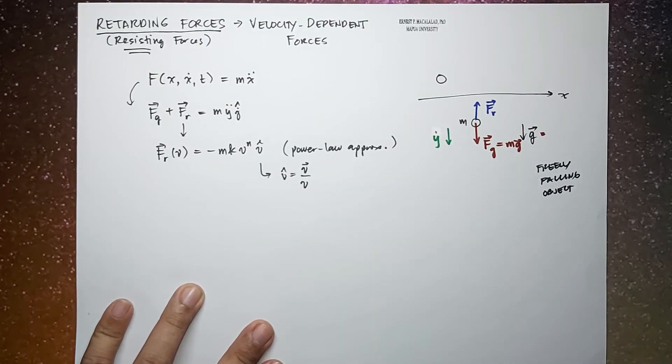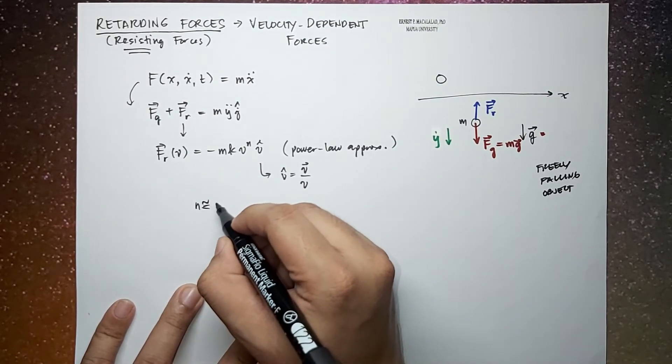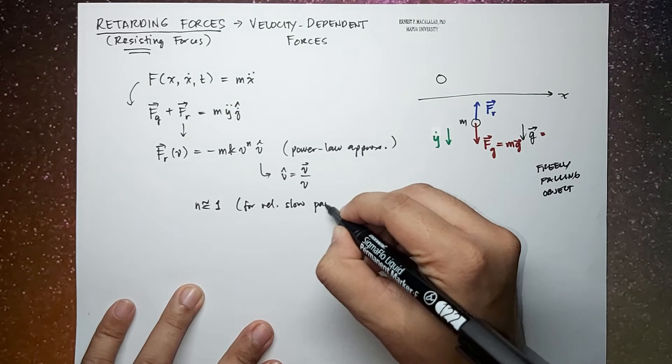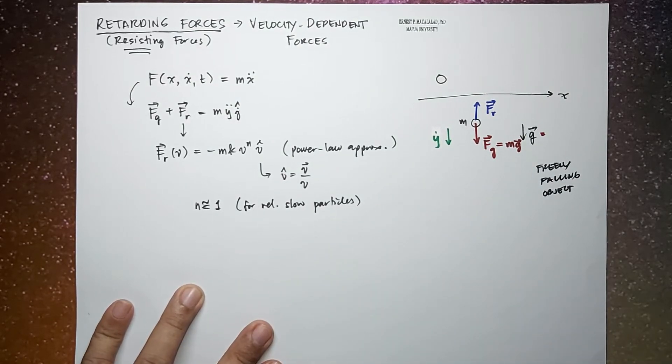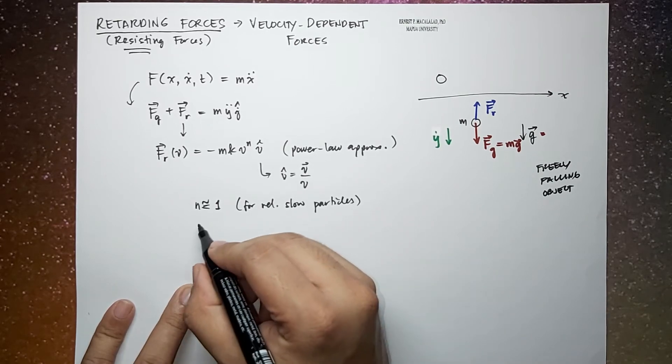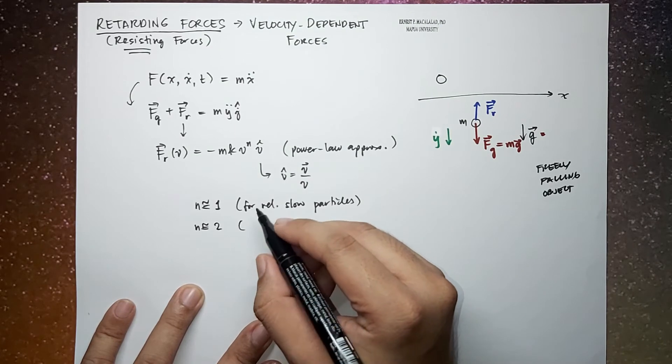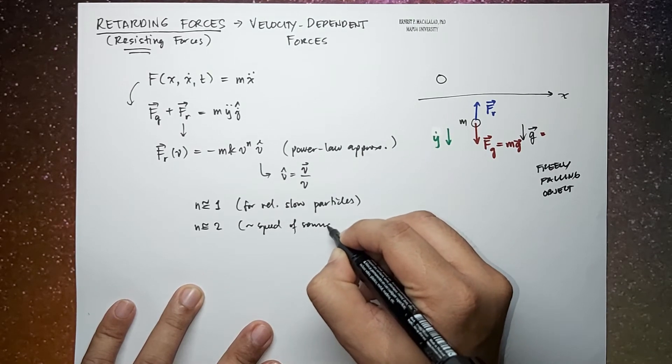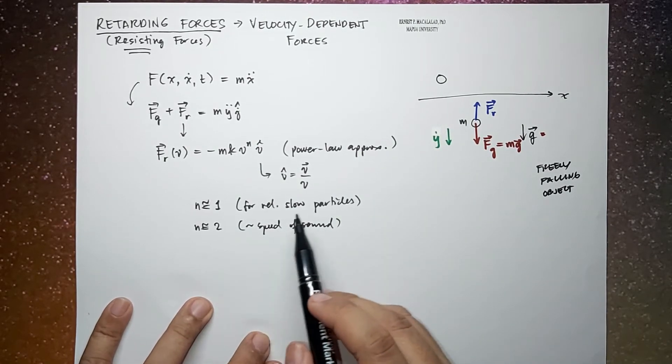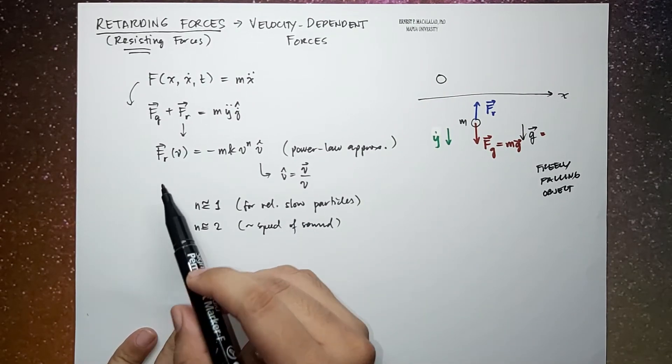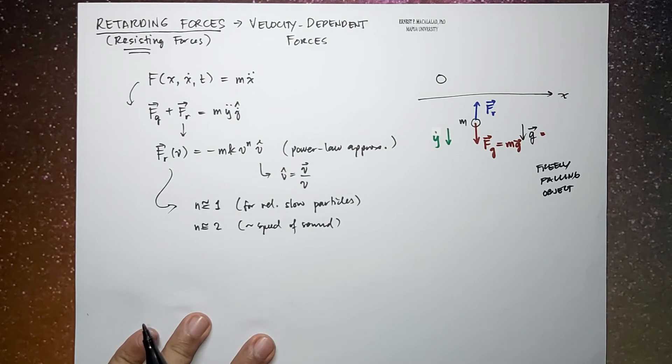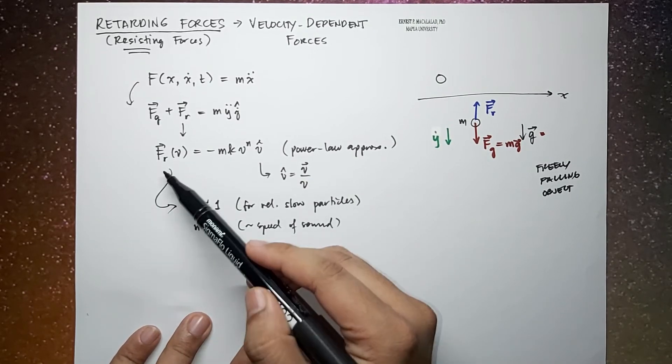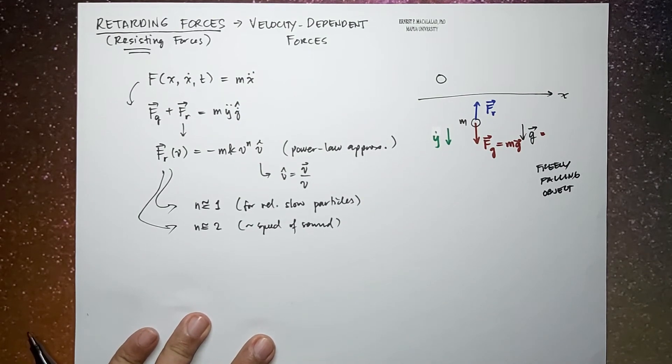Usually experimentally, n is approximately equal to 1, especially for relatively slow particles. However, for speeds around the speed of sound, n is approximately equal to 2. So that means usually for slow particles, this retarding force varies linearly with speed. And for a little bit more faster speeds, like for example velocities or speeds close to the speed of sound, this would be a quadratic case.